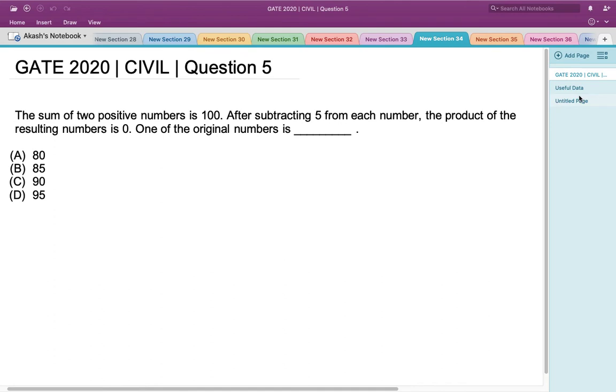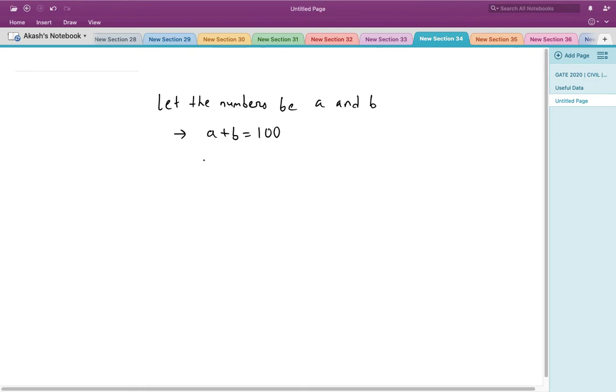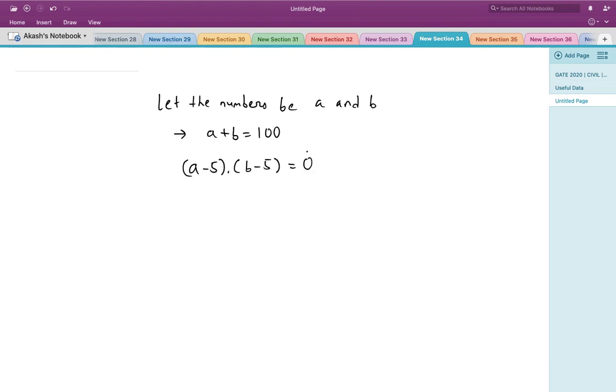Also, it is given that after subtracting 5 from each number, the product of the resulting numbers is 0. That means if I subtract 5 from each number and multiply those numbers, the product would be 0, so (a - 5)(b - 5) = 0.